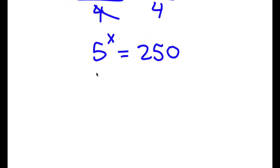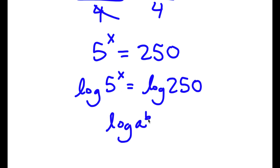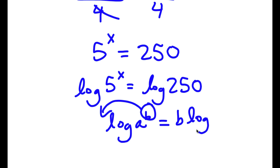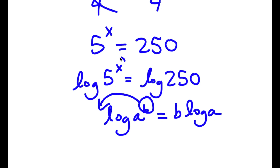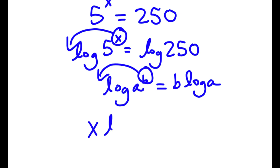Now I'm going to take the log on both sides. So now I have log 5 to the power of x is equal to log 250. And if I have something in the form log a to the power of b, I can move b to the front, giving me b times log a. So log 5 to the power of x — I can move x to the front — so now I have x times log 5 is equal to log of 250.